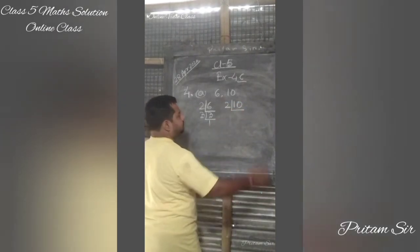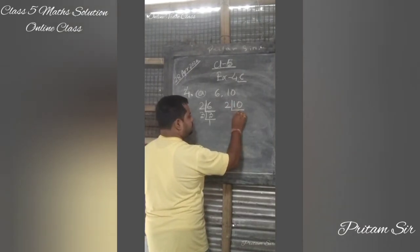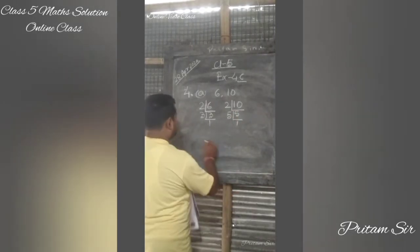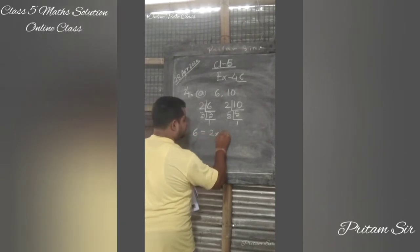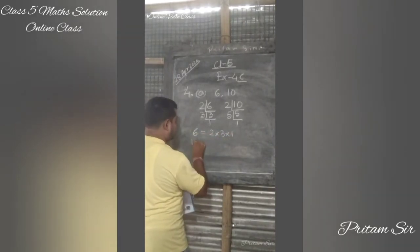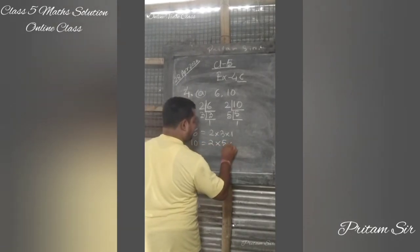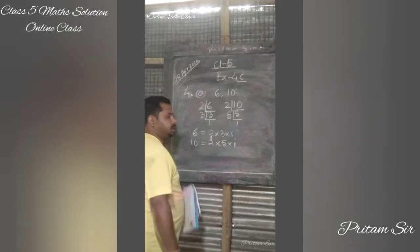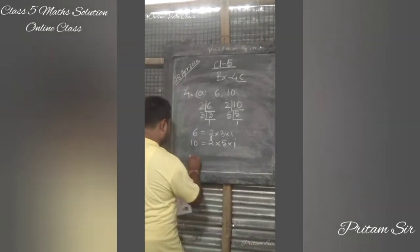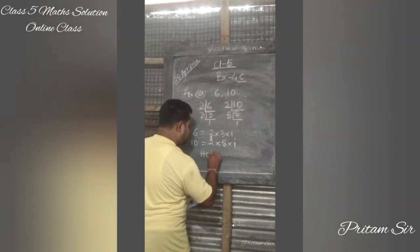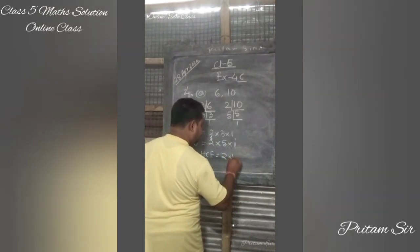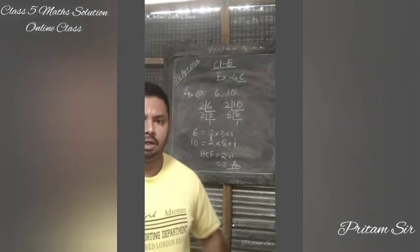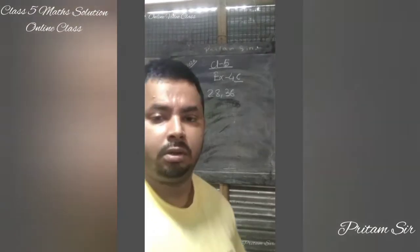Now 10 divided by 2 is 5. Since 5 itself is a prime number, we can write: 6 = 2 × 3 × 1 and 10 = 2 × 5 × 1. The common factors are 2 and 1, so the HCF is equal to 2 × 1, which means the HCF is 2.